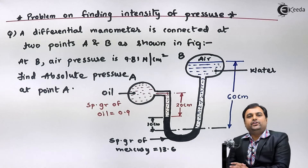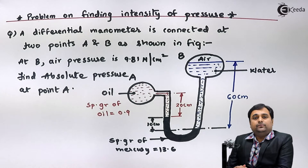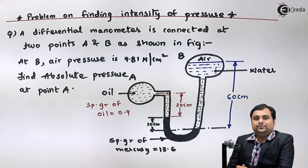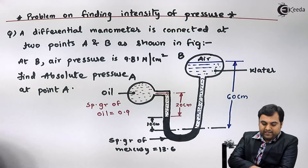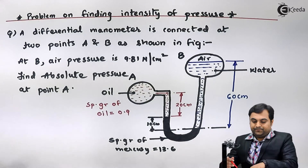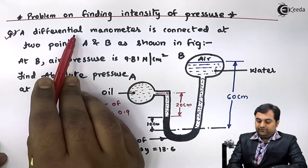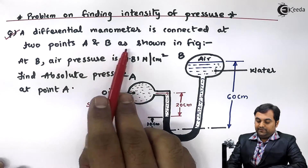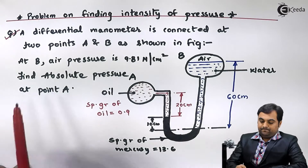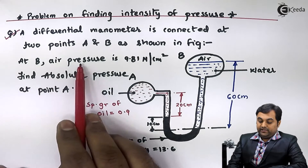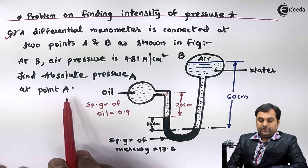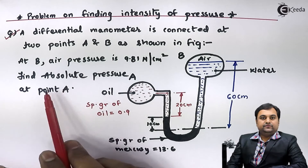Hello friends. In this video we will see a problem on how to calculate the pressure at a point in a pipeline by using a differential manometer. A differential manometer is connected at two points A and B as shown in the figure. At point B the air pressure is 9.81 Newton per centimeter square. Find the absolute pressure of point A.